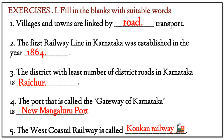Fill in the blanks: 1. Villages and towns are linked by road transport. 2. The first railway line in Karnataka was established in the year 1864.